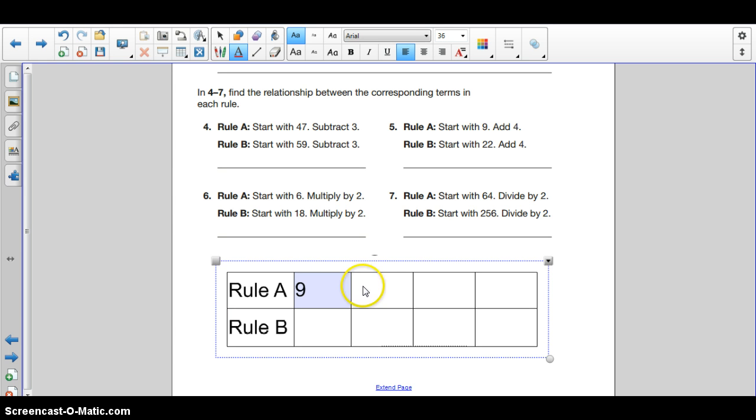So we start with 9 here. And then 9 plus 4 is 13. 13 plus 4 is 17. And 17 plus 4 is 21.